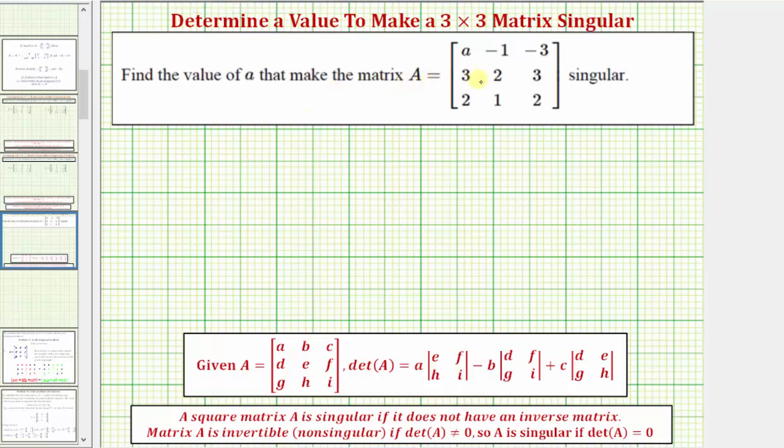We want to find the value of A that makes matrix A singular. Notice A is the entry in row one, column one.